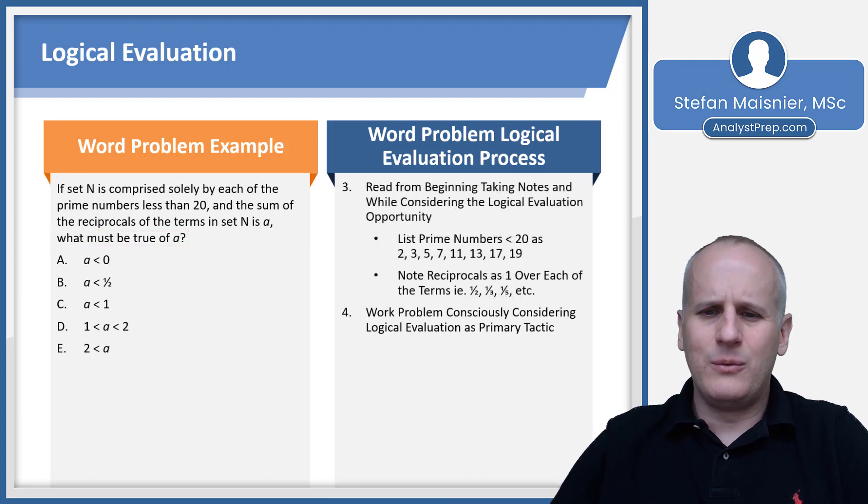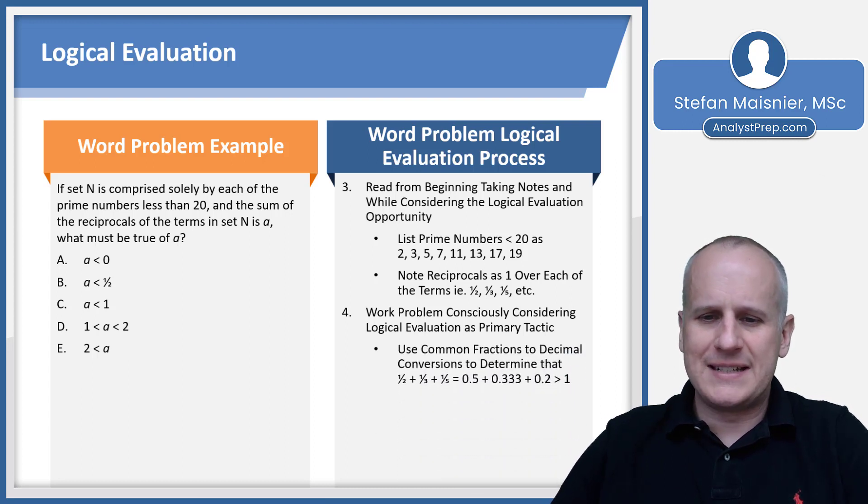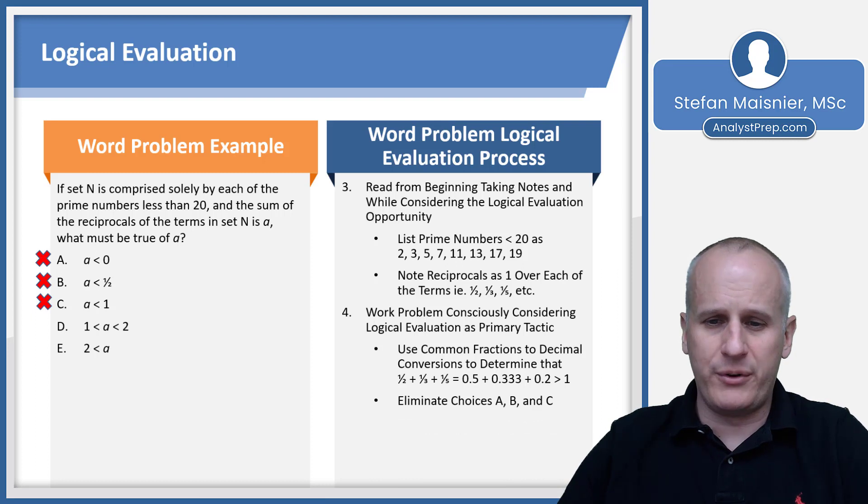Now we've got to work the problem consciously considering logical evaluation as a primary tactic, which means I'm not going to try to find a common denominator of one half, one third, one fifth, all the way up to one nineteenth. That is onerous and not necessary to do. Instead, there are some common fraction to decimal conversions that we can recognize. One half is 0.5, one third is 0.3, one fifth is 0.2. If I add just those three up, I'm over one. So because I'm over one at that point, I know that A, B, and C are immediately eliminated because it's got to be more than one half plus one third plus one fifth, which is greater than one already.